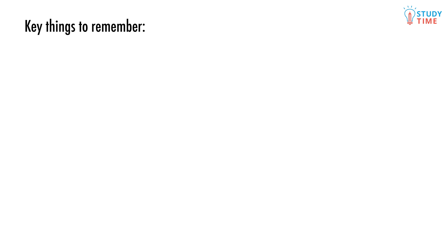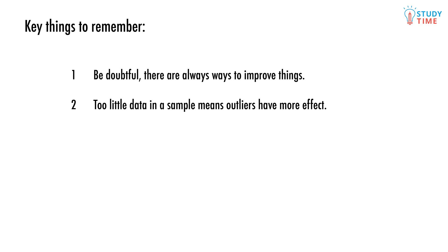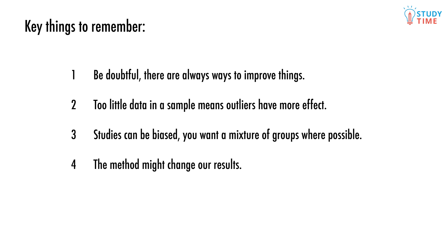Here's some things to remember. Be doubtful. There are always ways to improve things. Too little data in a sample means outliers have more effect. Studies can be biased. You want a mixture of groups where possible. The method might change our results. Always be clear what you mean by average.